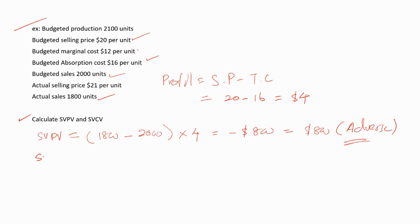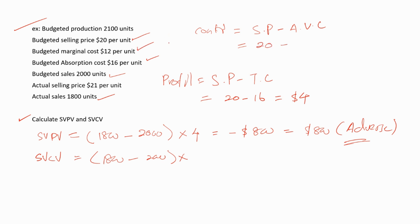Now let's calculate the sales volume contribution variance. SVCV = (Actual sales − Budgeted sales) × Standard contribution per unit. Contribution equals selling price minus all variable costs, using budgeted amounts: budgeted selling price of $20 minus budgeted marginal cost of $12 equals $8 standard contribution per unit. Therefore, SVCV = (1,800 − 2,000) × $8 = −$1,600, which means $1,600 adverse.